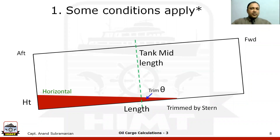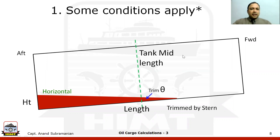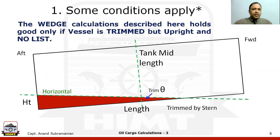Just as a disclaimer — there are some conditions which apply here as well. When talking about a wedge for examination — that is your phase 1 examination — the method we are going to discuss holds good only when the vessel is trimmed but upright and has zero list.